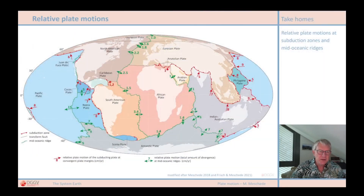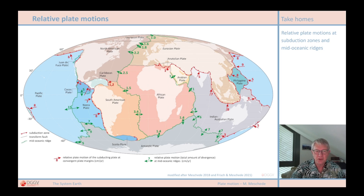We know that at diverging plate boundaries, two plates move away from each other because new oceanic crust is formed at the mid-oceanic ridge along the plate boundary. And at convergent plate boundaries, two plates move towards each other, with one plate subducting beneath the other — that means it is returned into the Earth's mantle. These movements are relative, meaning they relate to the plate boundary being considered. But looking at the global context, how can we say which plate is actually moving where?